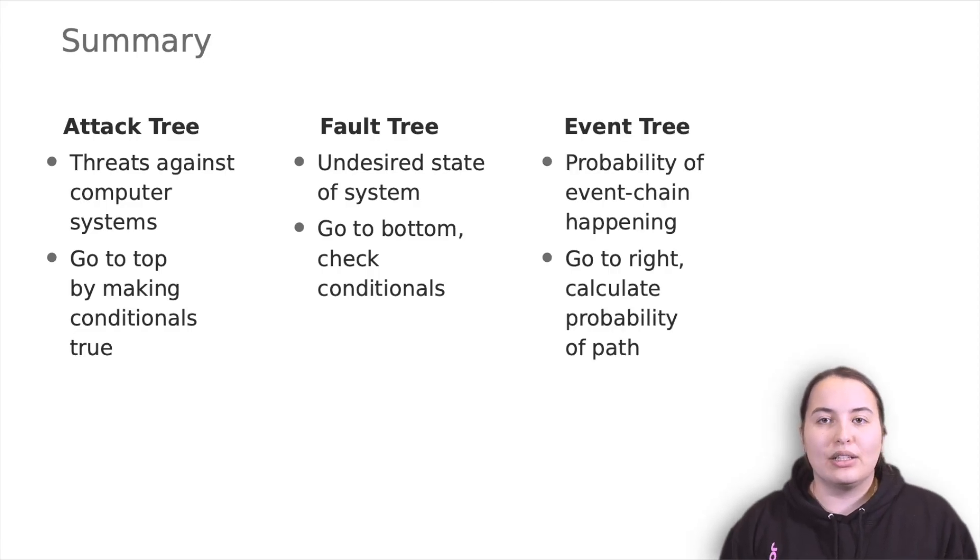Event trees inductively model the sequences of events that lead to an accident. Here the tree grows from left to right and calculates the probability of a path. The event tree should be applied to a system early in the design process to detect and prevent possible issues before they occur.